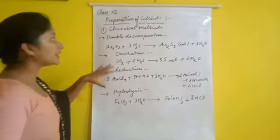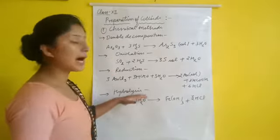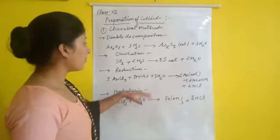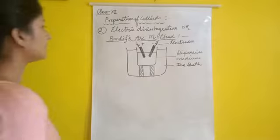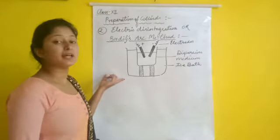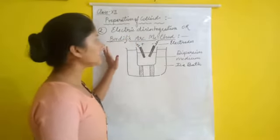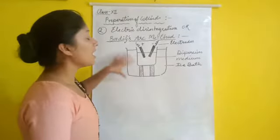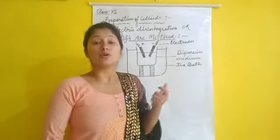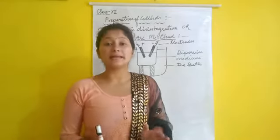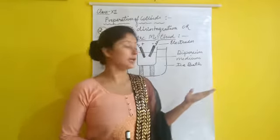By these chemical methods — double decomposition, oxidation, reduction, and hydrolysis — we can prepare various colloids. Now moving on to the second method of preparation of colloids: electric disintegration, or the Bredig arc method. This process involves both dispersion and condensation. Colloidal sols of metals such as gold, silver, and platinum can be prepared by this method.